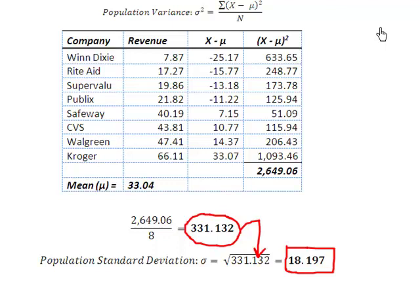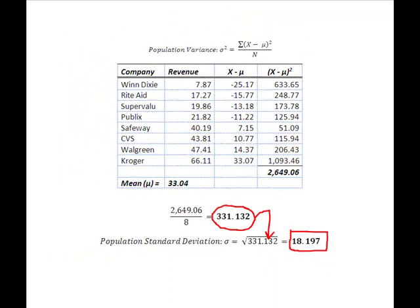That's all there is to calculating a population variance and standard deviation. What if we treated this data as a sample instead of a population? All we'd have to do is make one change to our calculation. When we use a sample to approximate a value for a population, we sacrifice one of our sample size. So instead of N in the denominator, I now have little n minus 1.